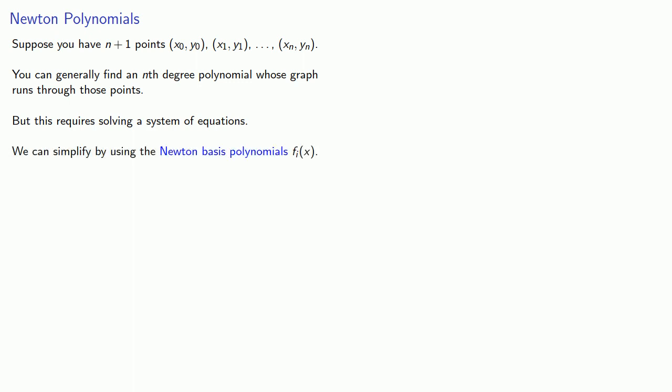Suppose you have n plus 1 points. You can generally find an nth degree polynomial whose graph runs through these points, but this requires solving a system of equations. We can simplify this process by using the Newton basis polynomials.